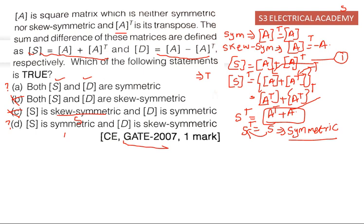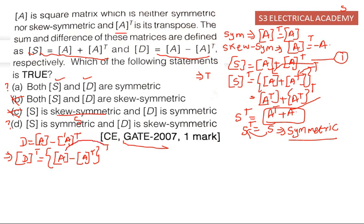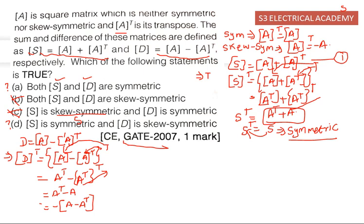Now we consider the difference D: we take D-transpose, which equals (A minus A-transpose) whole transpose. Splitting the transpose gives A-transpose minus (A-transpose) whole transpose, which is A-transpose minus A. Taking minus A outside gives minus (A minus A-transpose). From the given equation, D equals A minus A-transpose, so D-transpose equals minus D. This satisfies the condition for a skew-symmetric matrix.